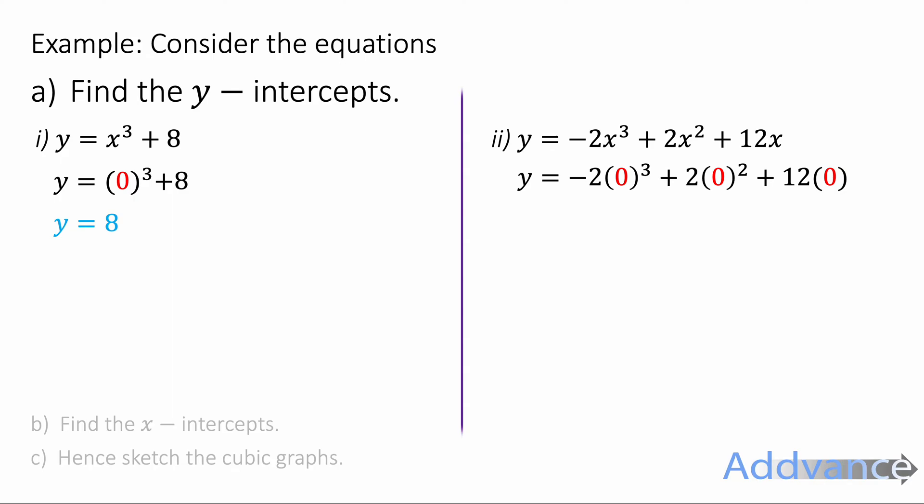Again, I'm going to do the same over here with the other equation. I'm going to substitute x = 0. -2 × 0³ + 2 × 0² + 12 × 0. You can do this on your calculator, but it's just quite obvious that you'll just get zero here. All of these terms will be zero. So the y-intercept is (0, 0).